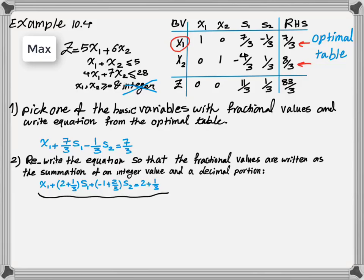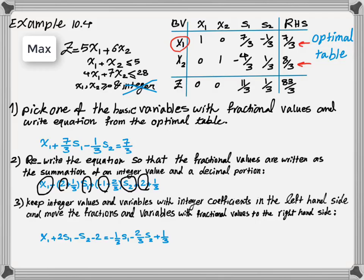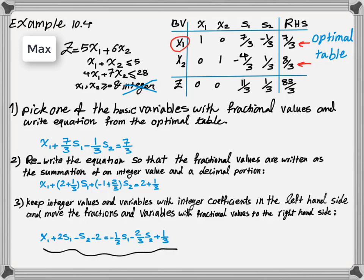Now that I have created this new equation, I need to keep integer values and variables with integer coefficients on the left-hand side, and move any fractions and variables with fractional coefficients to the right-hand side. So in this case, x1 plus 2s1 minus s2 plus 2 stay on the left-hand side. On the other hand, (1/3)s1, (2/3)s2, and 1/3 go to the right-hand side. This equation is exactly the same as before — we just separated integer terms to the left and fractional terms to the right.